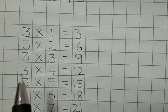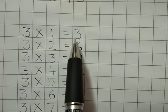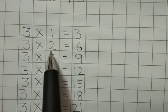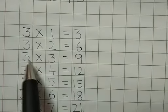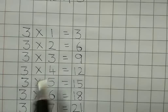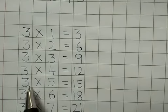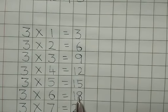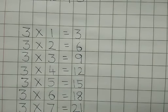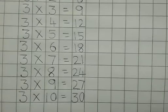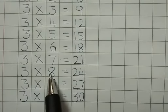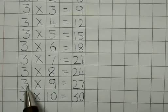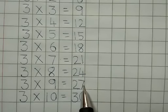One more time. Three ones are three. Three twos are six. Three threes are nine. Three fours are twelve. Three fives are fifteen. Three sixes are eighteen. Three sevens are twenty-one. Three eights are twenty-four. Three nines are twenty-seven. Three tens are thirty.